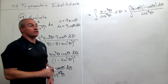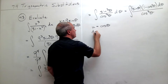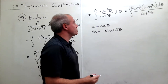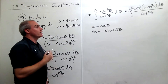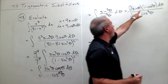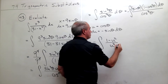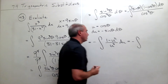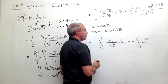Now we make a u substitution: let u equal cosine theta, so du equals negative sine theta d theta. To make the substitution we need a negative on the inside, which gives a negative on the outside of the integral. The integral becomes negative times the integral of 1 minus u squared divided by u cubed du, or equivalently, negative times the integral of u to the negative 3 minus u to the negative 1 du.